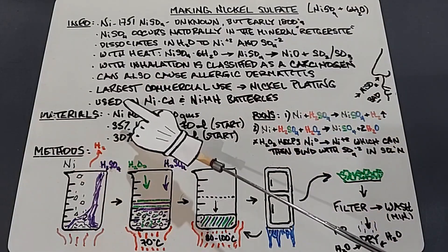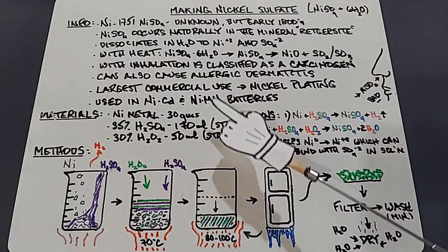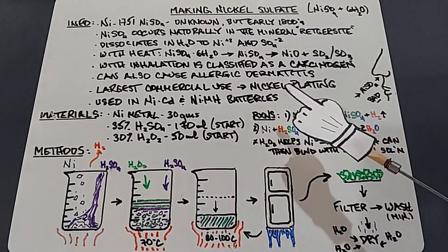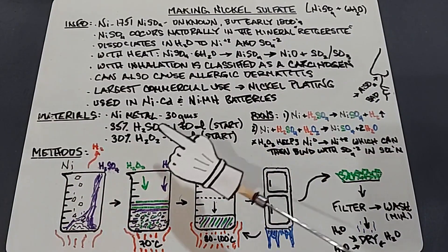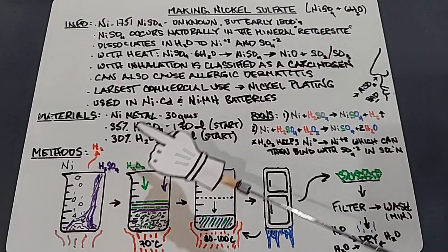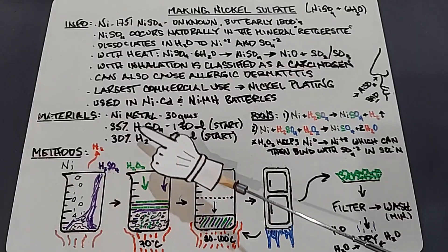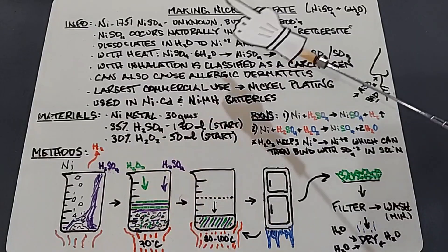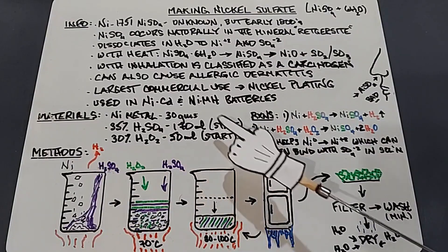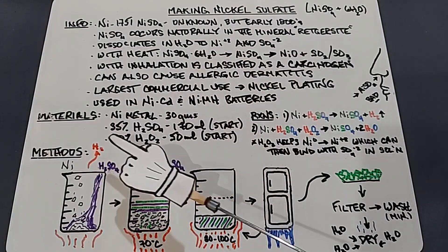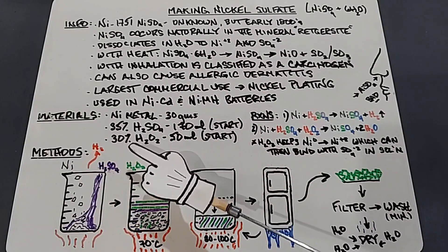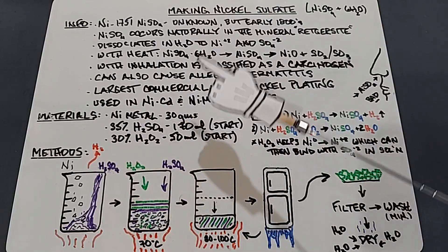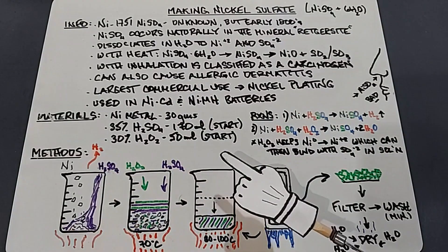In our materials we're going to use nickel metal - 30 grams, 35% sulfuric acid, which is basically battery acid strength in the U.S., and I'll start with 170 milliliters. We'll also use 30% hydrogen peroxide. I'm not going to mess around like I did with nickel chloride - we'll go right to 30%, 50 milliliters to start.